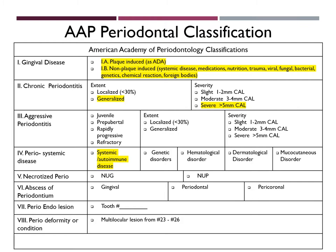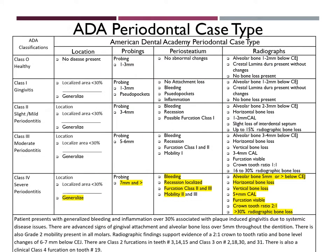There is a periodontal condition in which there is a multilocular lesion from tooth number 23 and number 26 in the radiographs. For ADA periodontal case type, my patient presents with class 4 severe periodontitis, which is generalized. As you can tell on the periodontal assessment, there were probing readings of 7 mm and above.